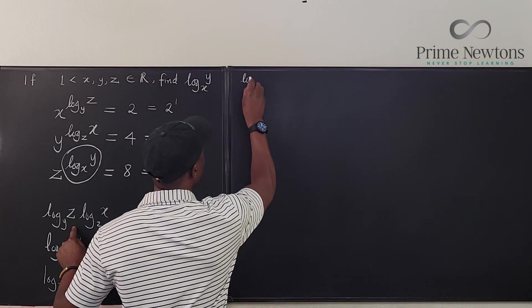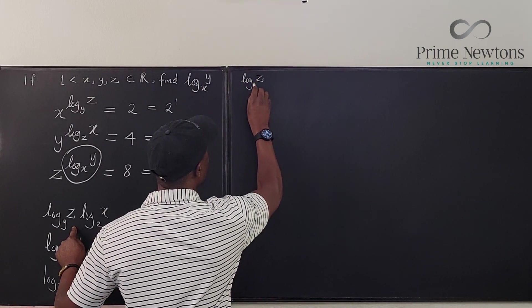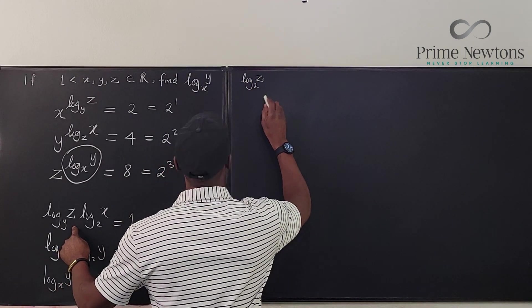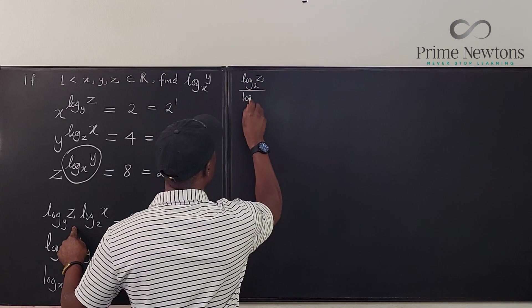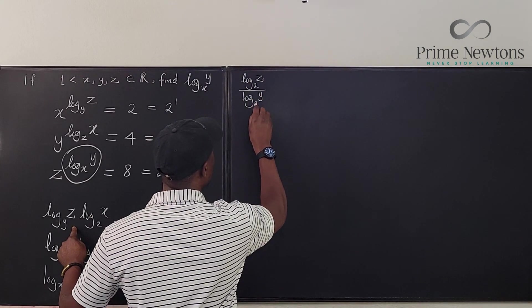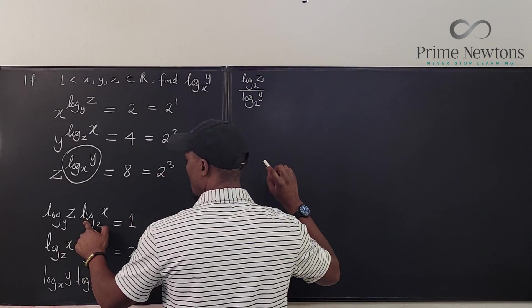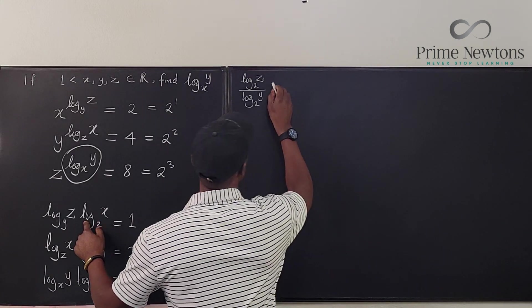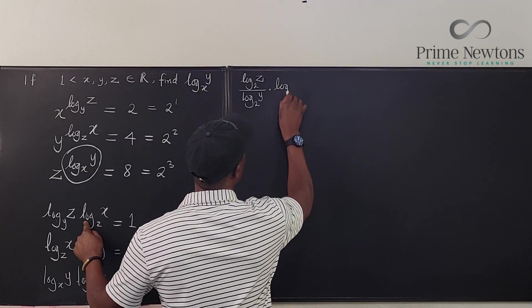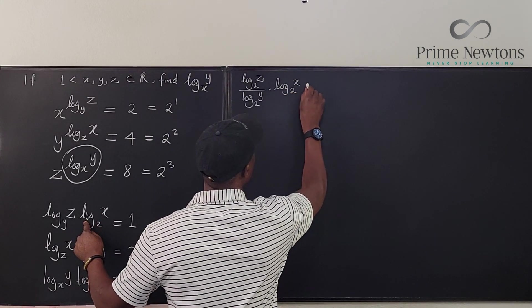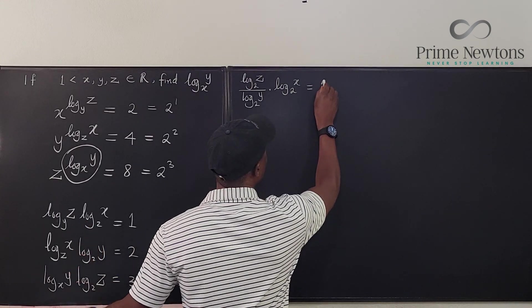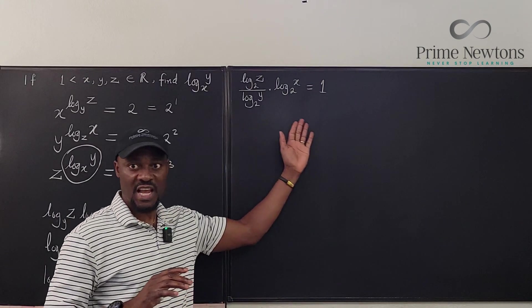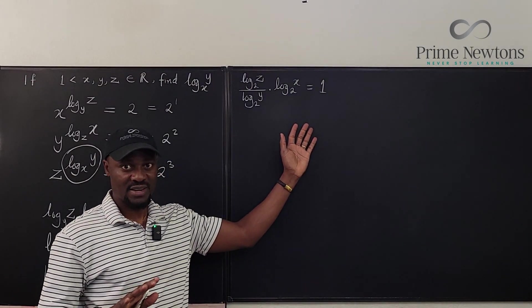So we have log z base 2 divided by log y in base 2 multiplied by log x base 2 times log x base 2 is equal to, this is still 1. Remember, we haven't changed anything in what we're doing. Nothing has changed.